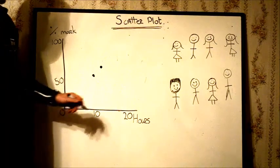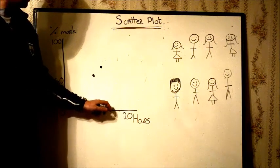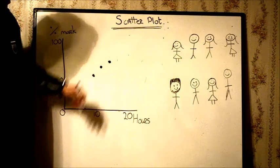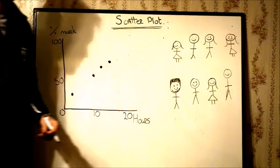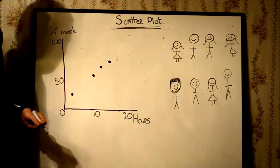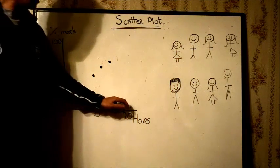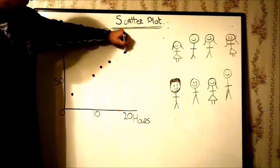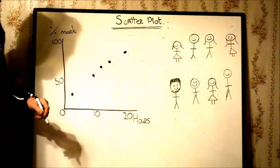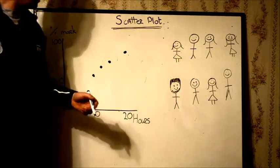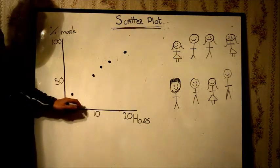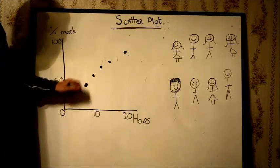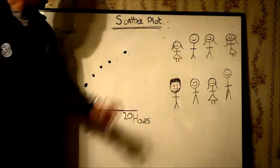And Louise, well she studied 15 hours and she got 70%. And JJ being the hard working man that he always is, well he studied 20 hours and he got 95%. And then Willie, let's say Willie studied 8 hours and Willie came out with 45%.